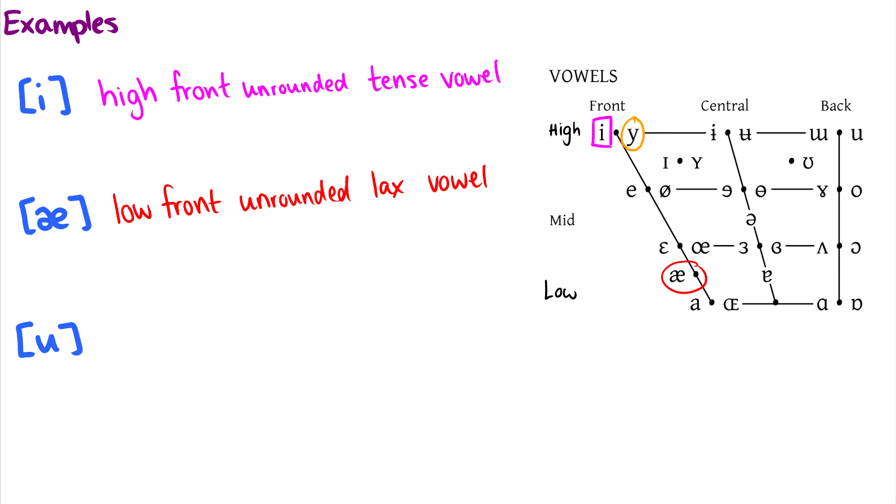Finally, let's do oo. So this is now going to be a high vowel. It is a back vowel. It is rounded. You can even feel it in your lips. And it is a tense vowel.